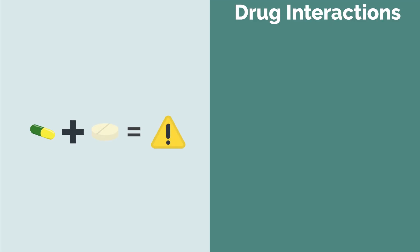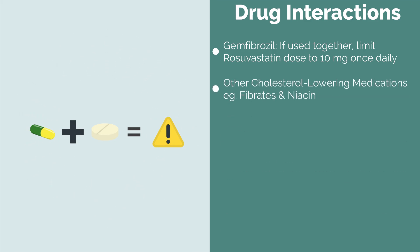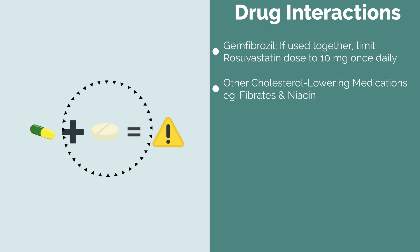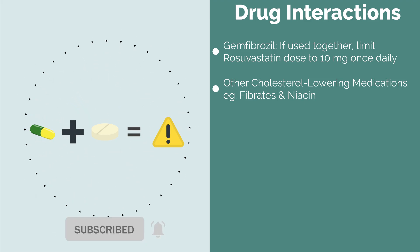On to some drug interactions. The first one is gemfibrozil, which may also be given to take care of triglycerides. If possible, this combination should be avoided, but where the two must be taken together, the general recommendation is to limit the Rosuvastatin dose to 10 milligrams once a day. Other cholesterol-lowering medications like fibrates — a typical example is fenofibrate — or niacin, have also been known to increase the risk of developing side effects if taken concurrently with Rosuvastatin. This doesn't mean the combination can never be used; it just means there is an increased risk for side effects, so you should be on the lookout.